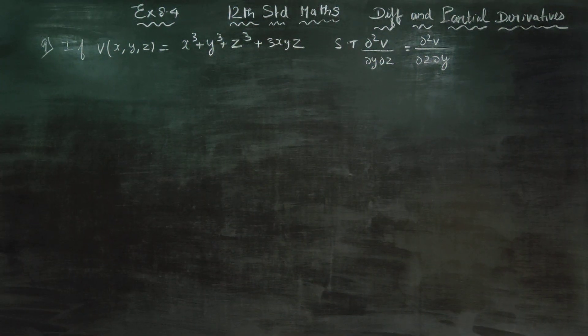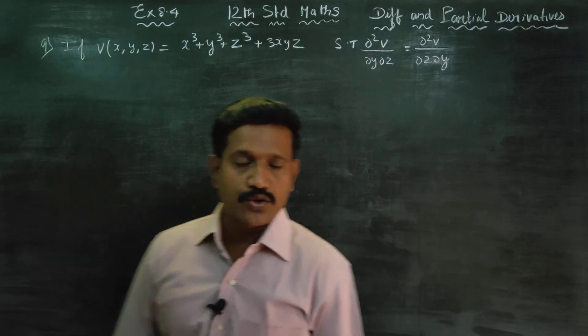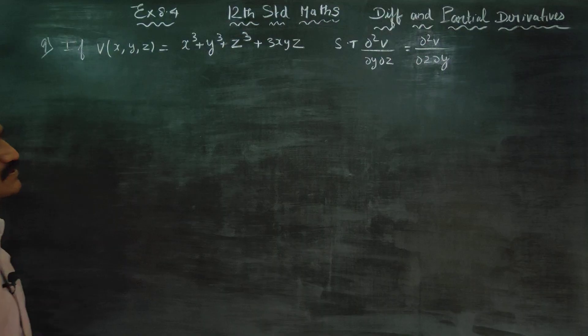Dear 12th standard students, in exercise number 8.4, sum number 9, if v is equal to the function of xyz is x cubed plus y cubed plus z cubed plus 3xyz, show that.